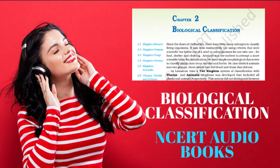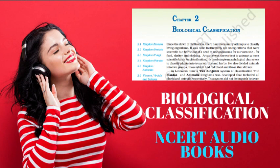Topic 2.2.2 Dinoflagellates. These organisms are mostly marine and photosynthetic. They appear yellow, green, brown, blue or red depending on the main pigments present in their cells. The cell wall has stiff cellulose plates on the outer surface. Most of them have two flagella: one lies longitudinally and the other transversely in a furrow between the wall plates. Very often, red dinoflagellates (e.g., Gonyaulax) undergo such rapid multiplication that they make the sea appear red, called red tides. Toxins released by such large numbers may even kill other marine animals such as fishes.